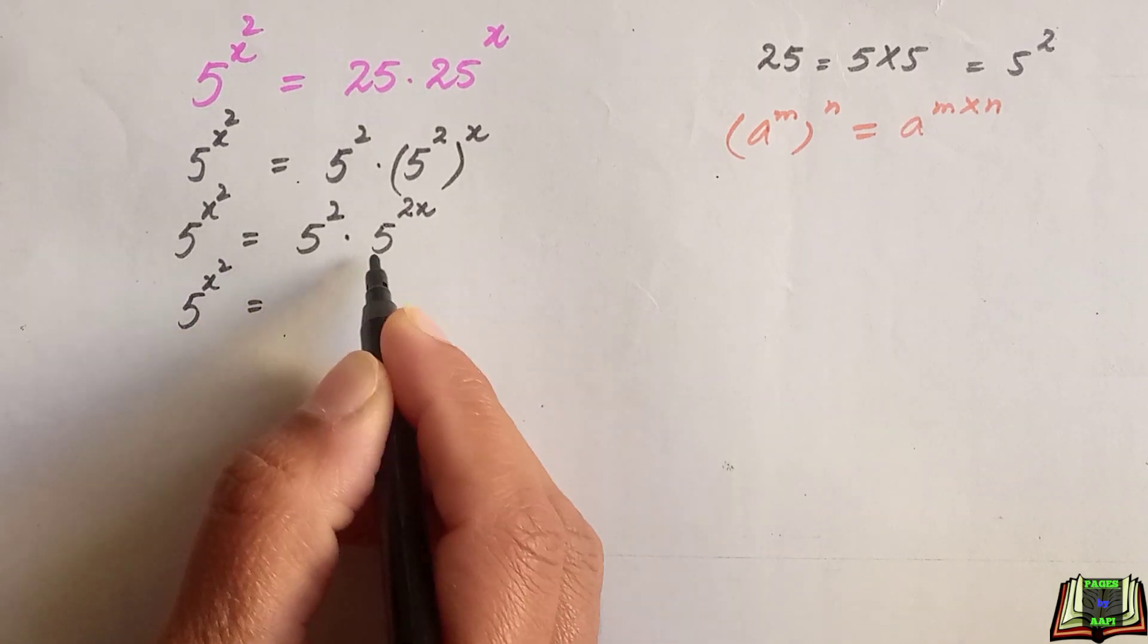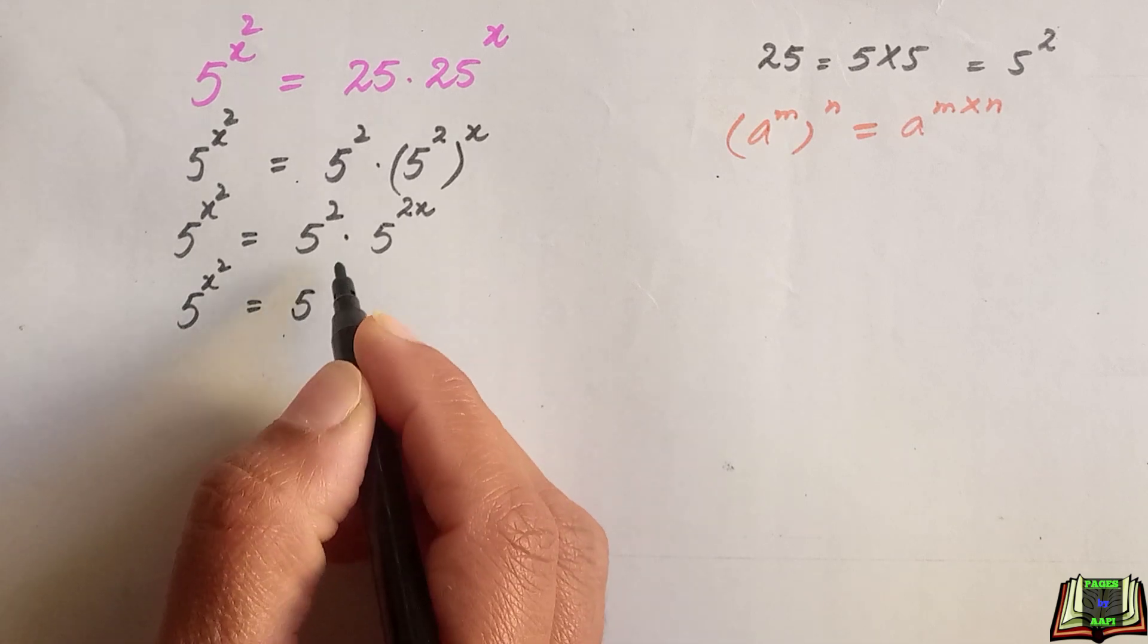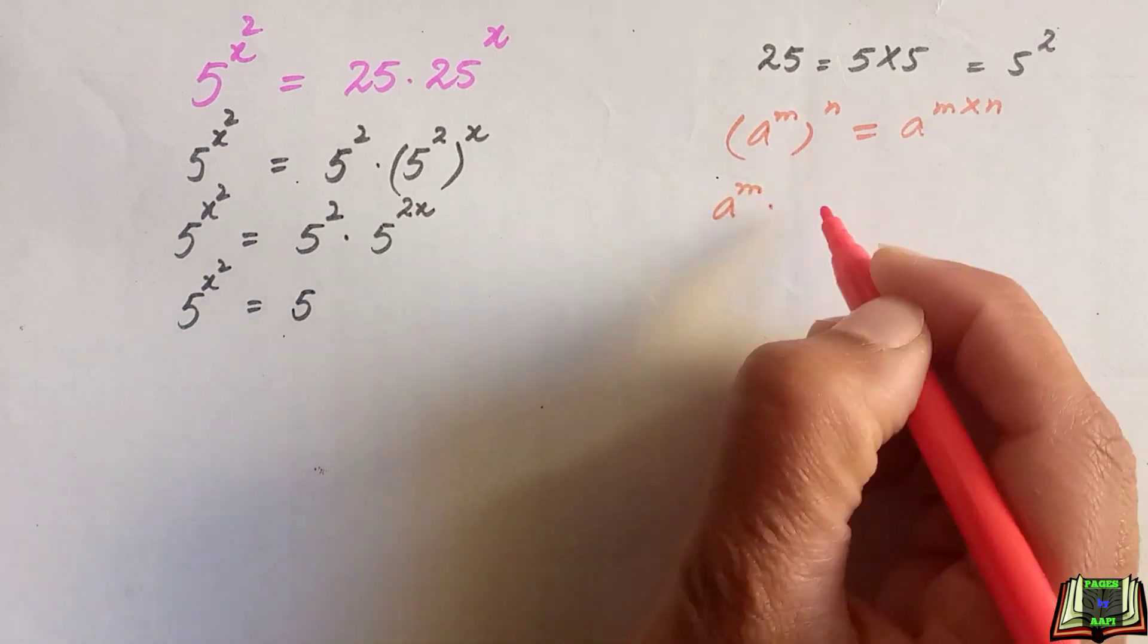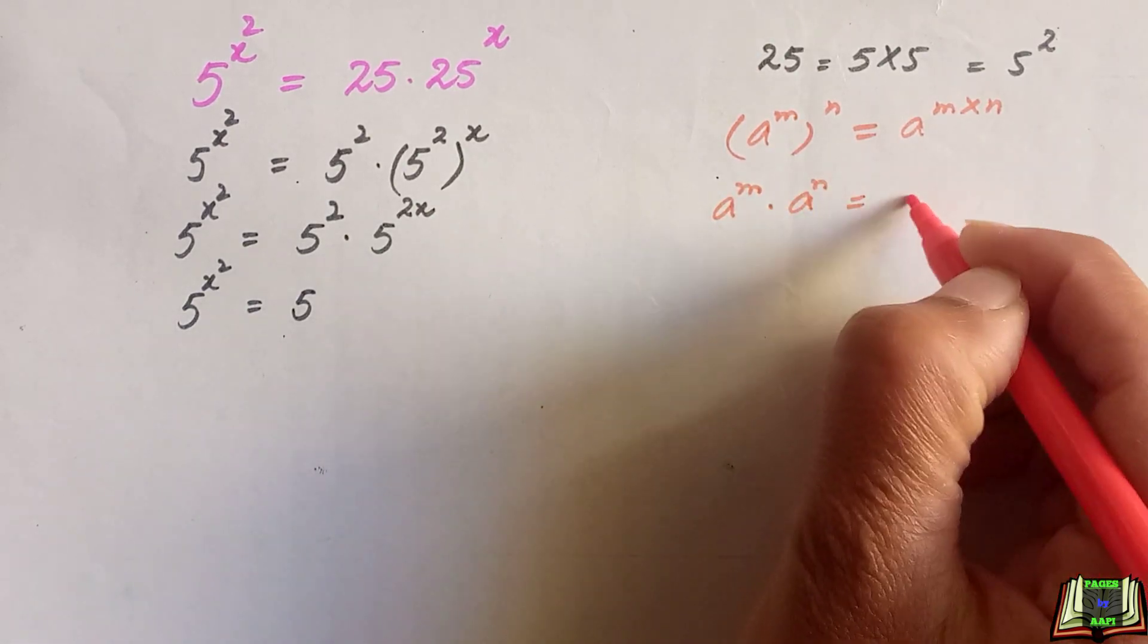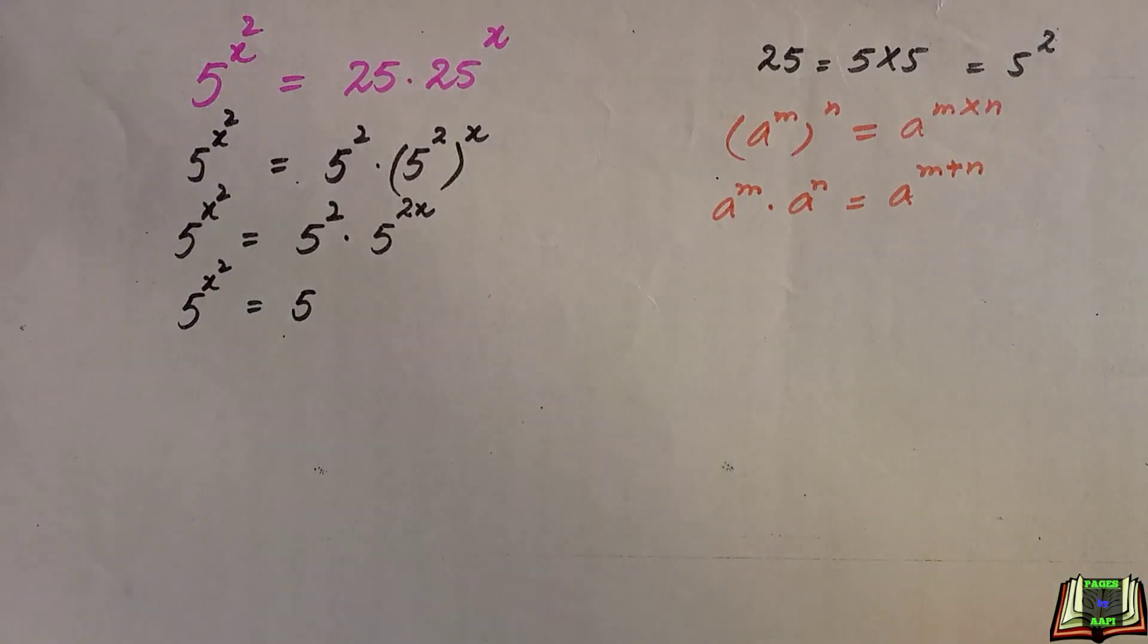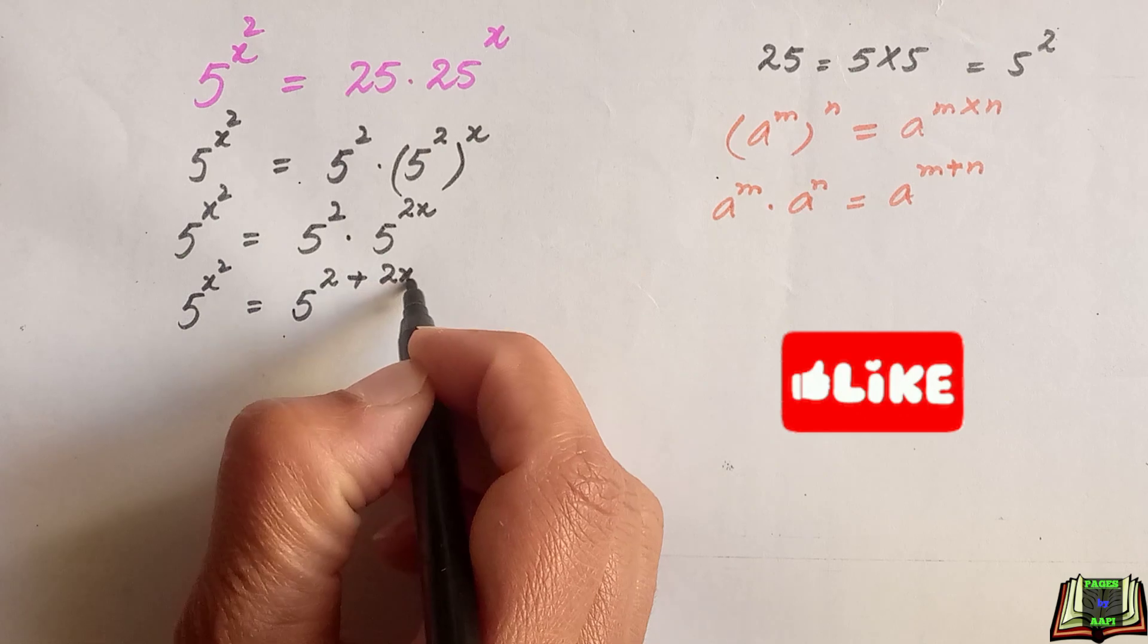If two bases are multiplying with different powers we use product rule of power. According to that rule, if a raised to power m times a raised to power n, this is equal to a raised to power m plus n. So we will add these two powers, 5 raised to power 2 plus 2x.